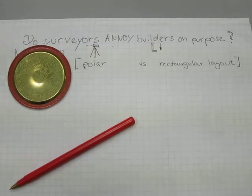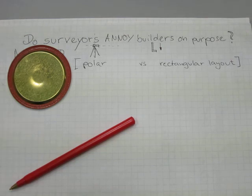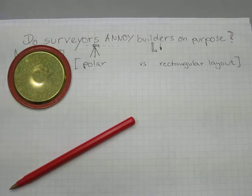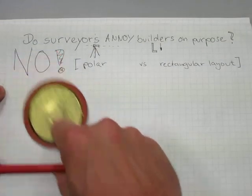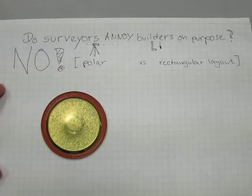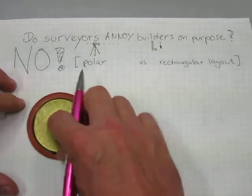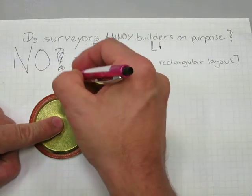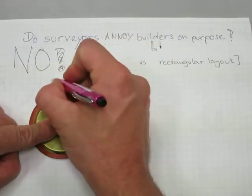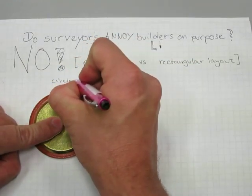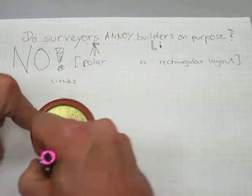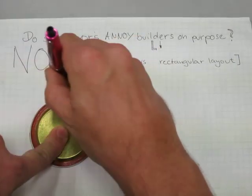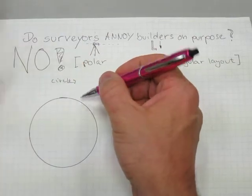In this video I will try to settle the age-old question: do surveyors annoy builders on purpose? Well, the short answer is no. I will explain to you the differences between polar and rectangular layout. Polar layout is something that surveyors use and it involves circles — their world is all about circles and this is how they work.